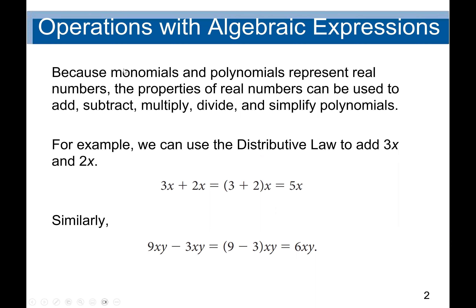For example, we have the term monomial. Monomial means an expression with only one term. Poly means many, so polynomials means many terms. For example, 3x or 2x is a monomial. But if I have 2x plus y, then it's a binomial. Then if I have 2x plus 3x plus y, etc., if the terms are 3, we say trinomial or polynomial.